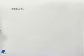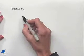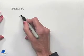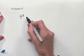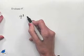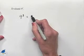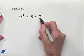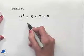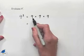In the next problem we're going to look at exponential notation. We want to evaluate 9 to the third power. 9 to the third power is also called 9 cubed. It's equivalent to 9 times 9 times 9.